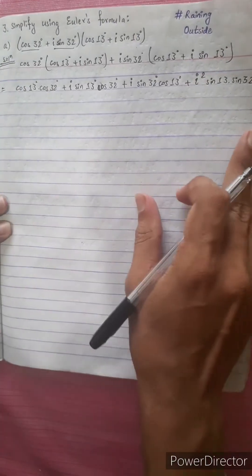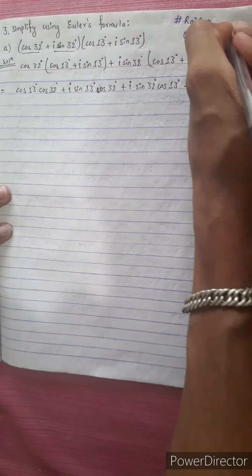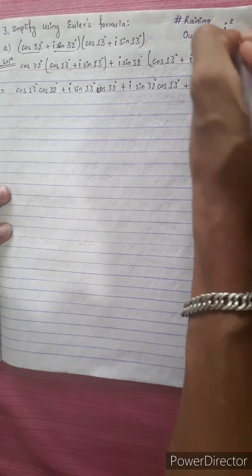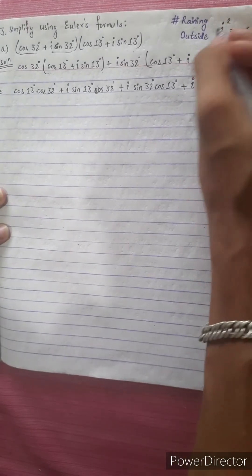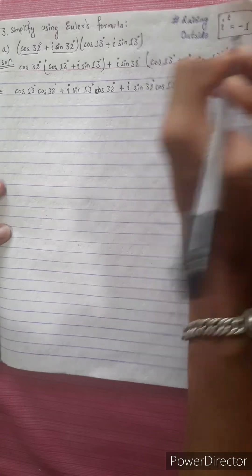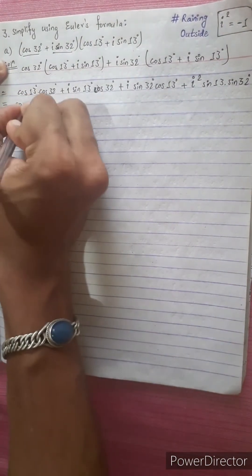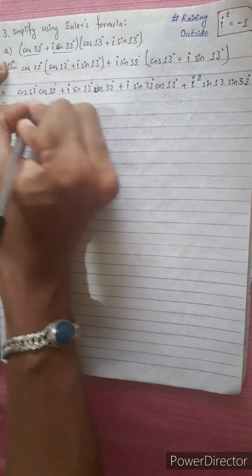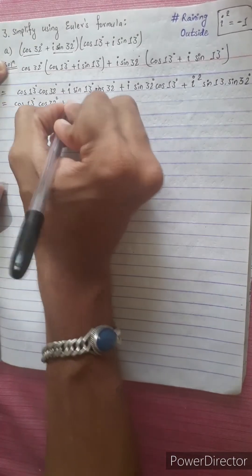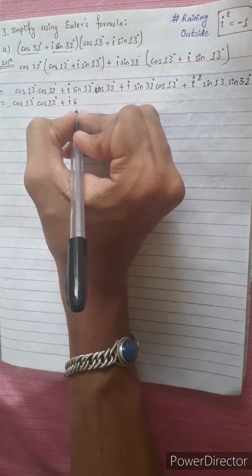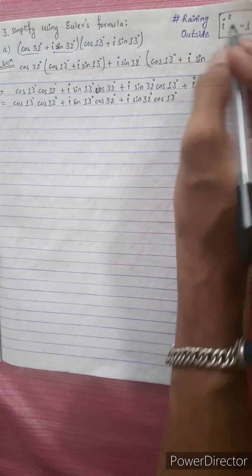अब हमले वड़ा फर्मुला थाउन बसा जाईले पनी i square equals to minus 1. यह फर्मुला जाई पनी काम लाग्षा — यह थापाउन पर्षा i square equal to minus 1. अब एलाई solve गरूं — plus i square minus.